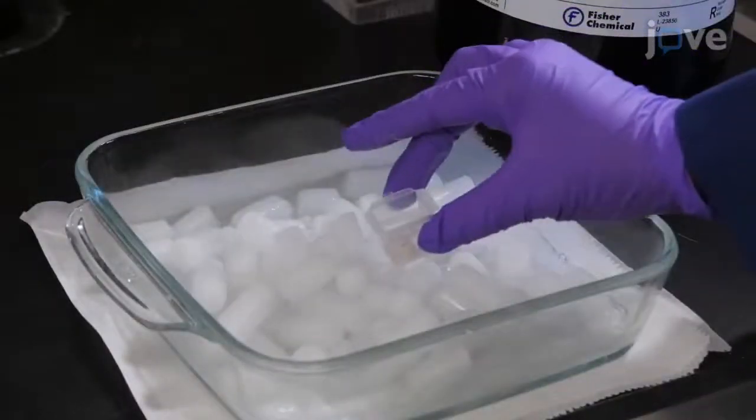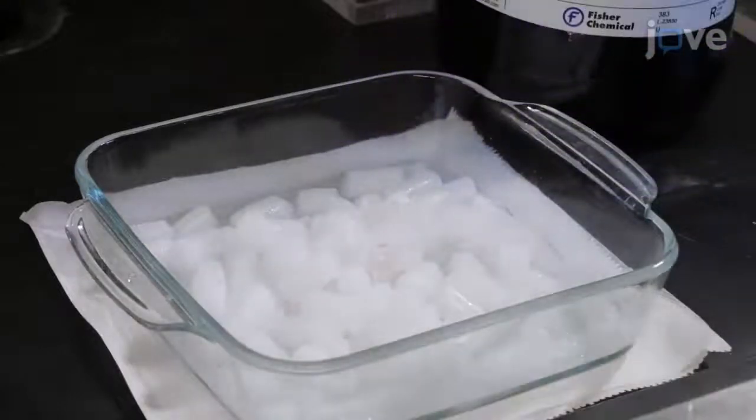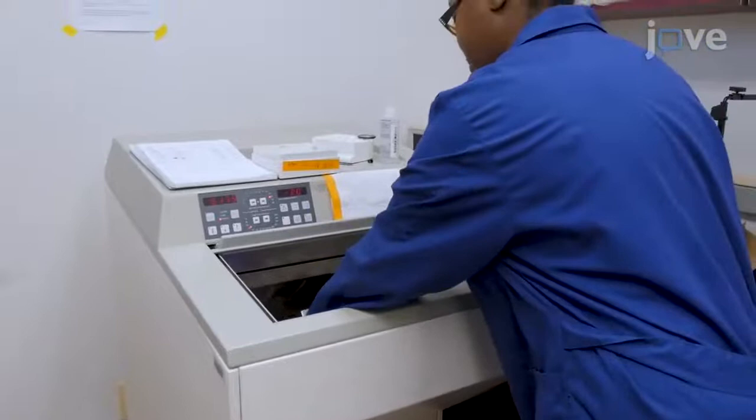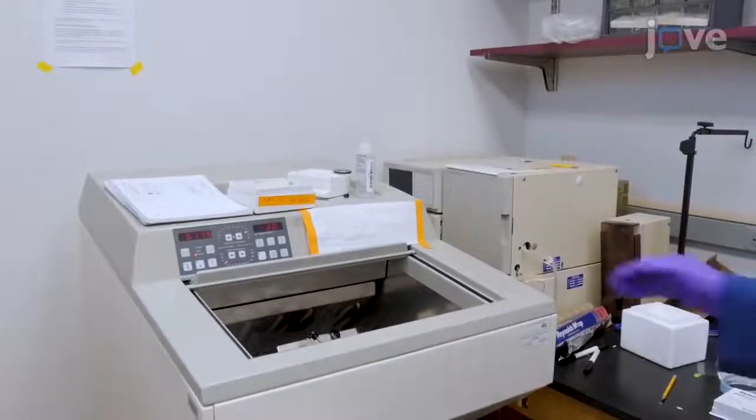Freeze the embedded brain in a minus 80 degrees Celsius freezer for at least 12 hours until further use. Place the mold with the brain into the cryostat and incubate it for several hours to adjust its temperature to that of the cryostat.